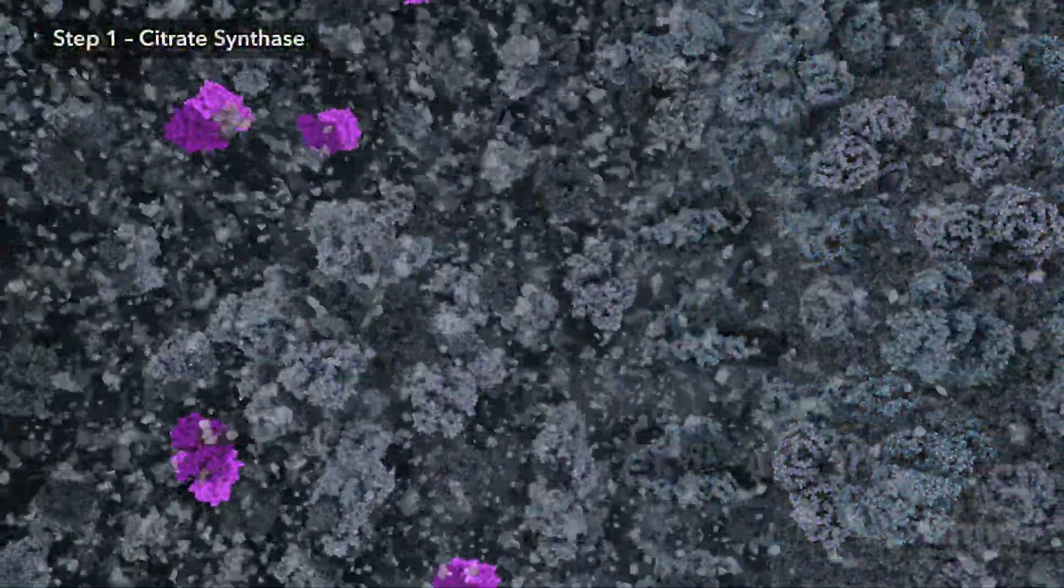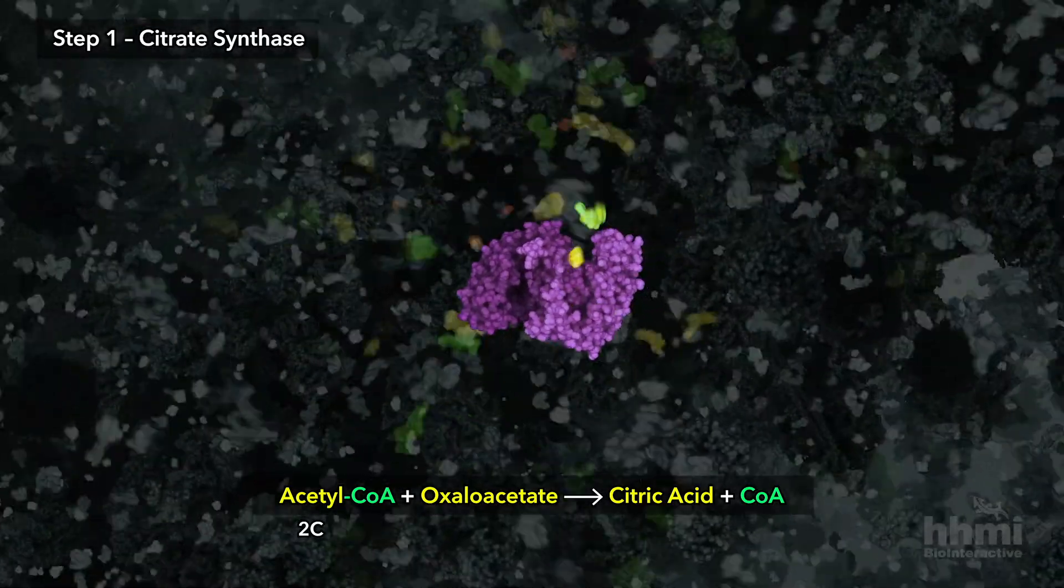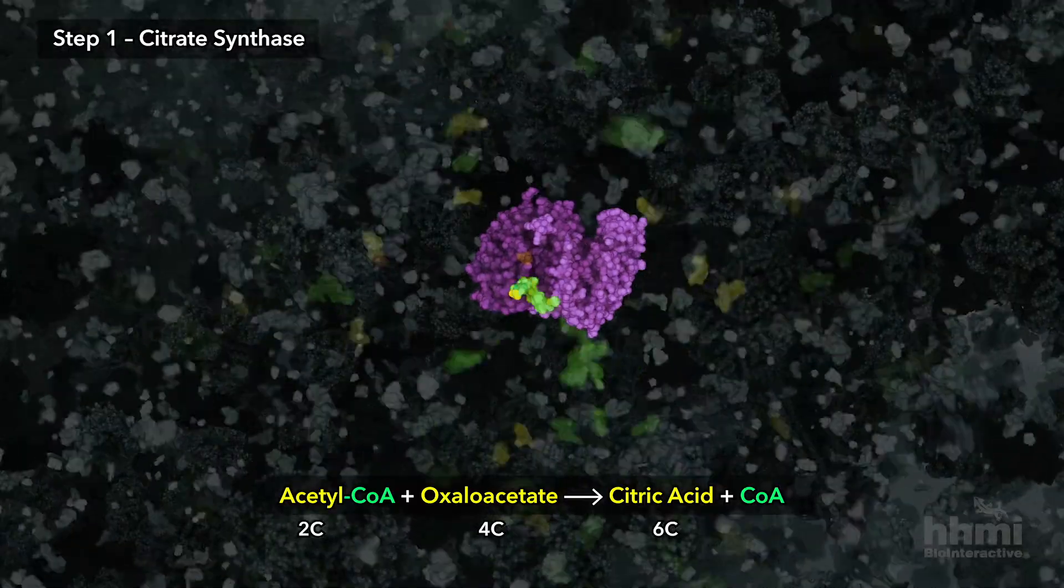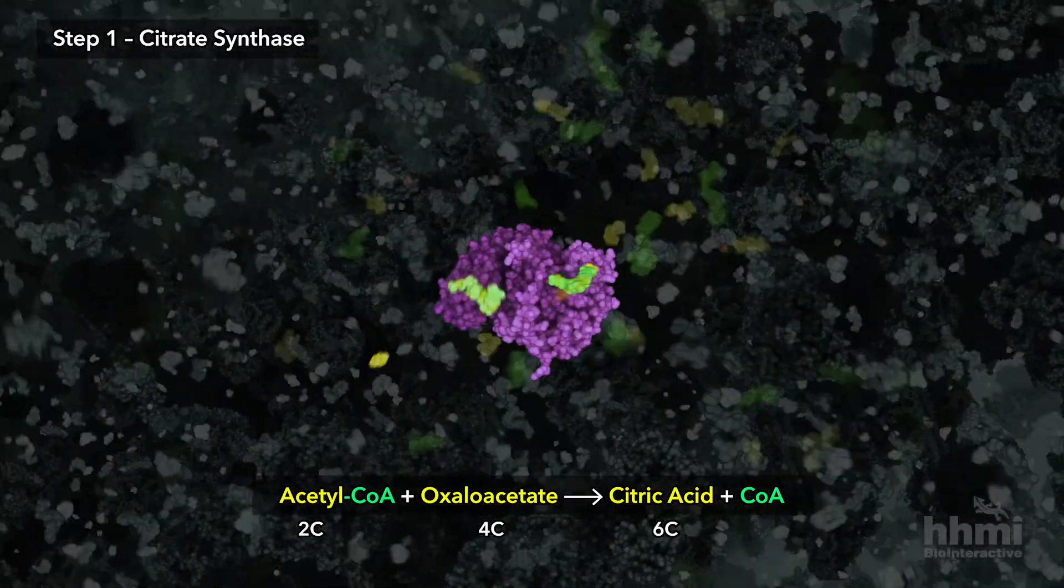Step one is the catalytic transfer of a two-carbon acetyl group from coenzyme A to four-carbon oxaloacetate, creating six-carbon citric acid, the molecule that gives the cycle its name.